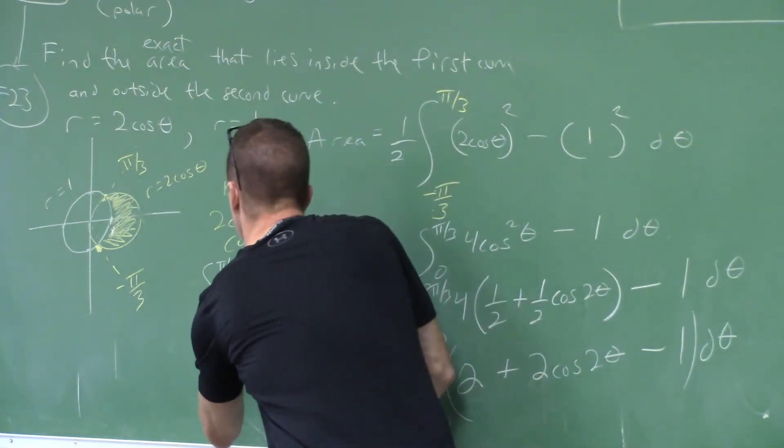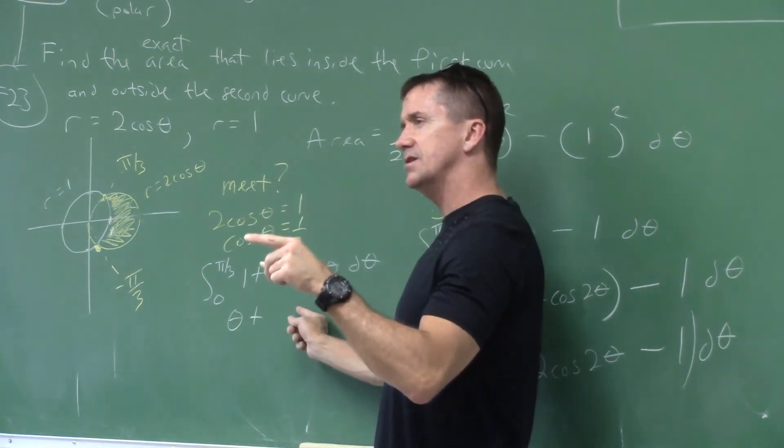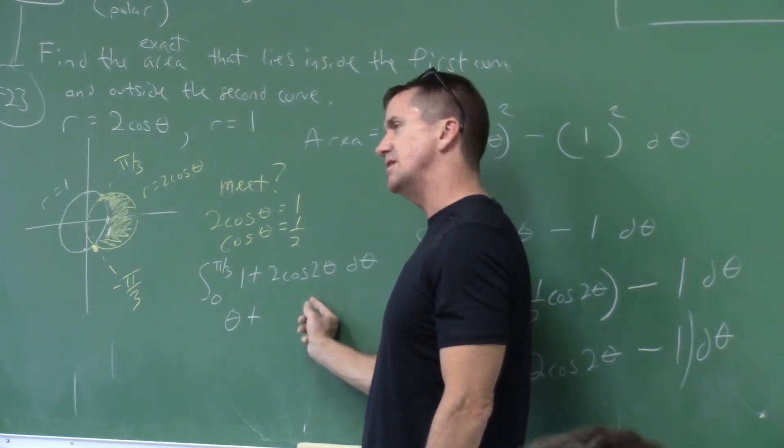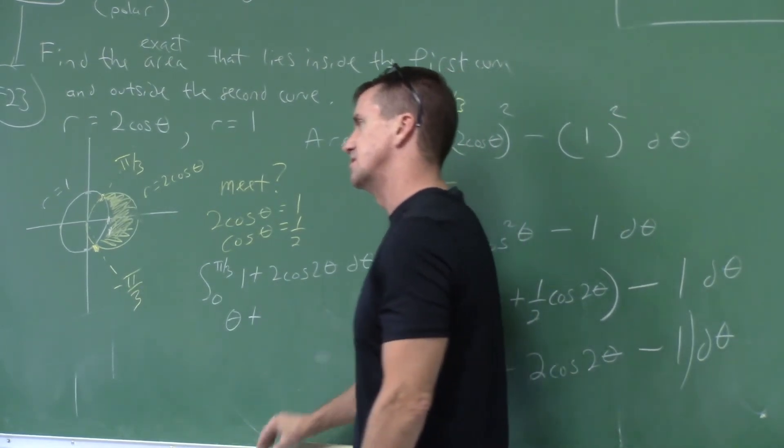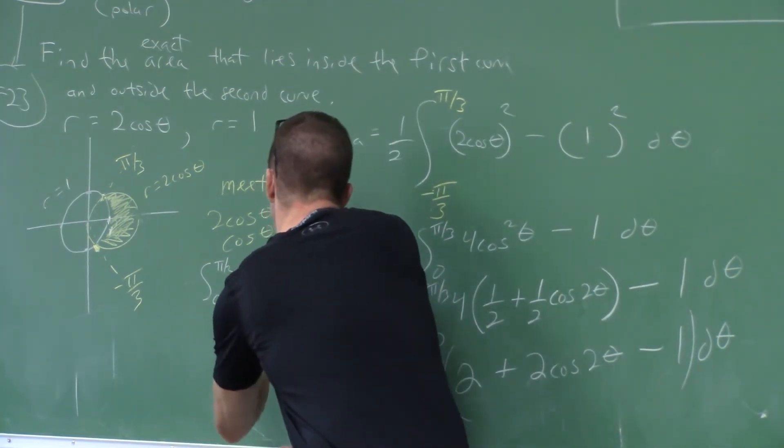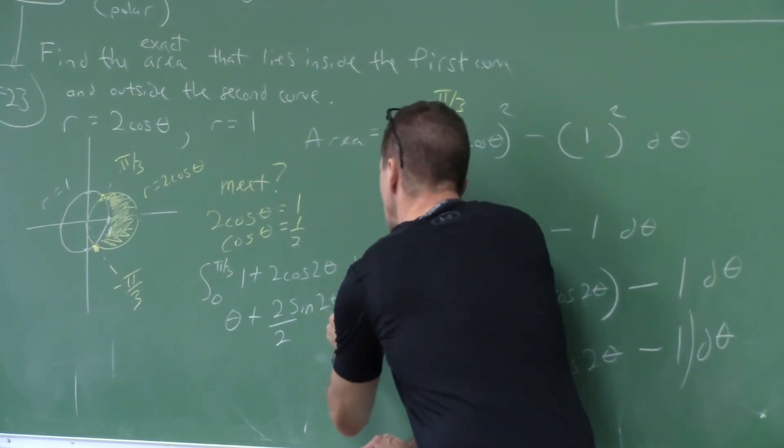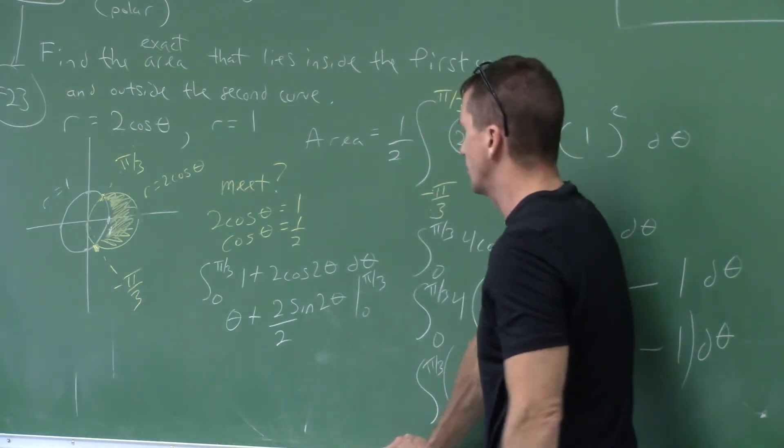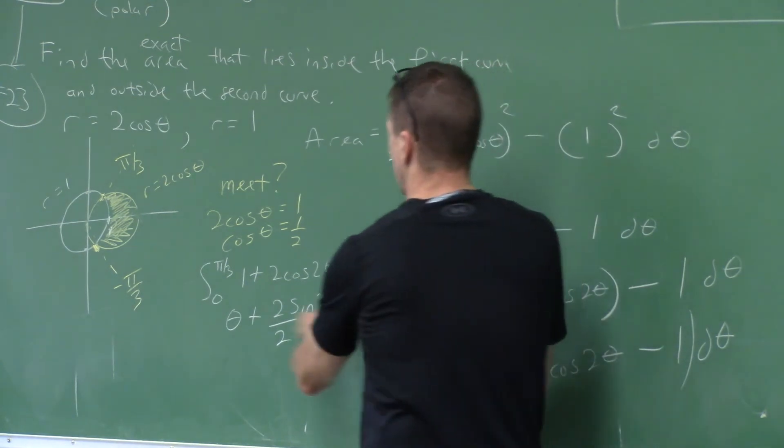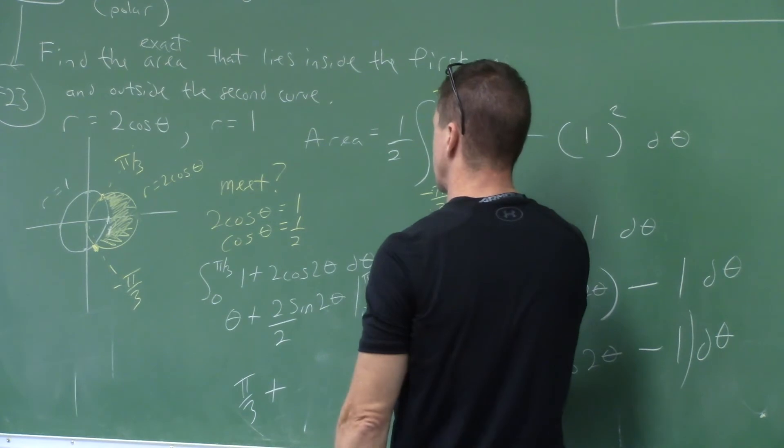What's that integral? That's theta. What will this become? Sine two theta divided by two. Two sine two theta divided by that two that emerges when you do the u substitution. It just keeps happening over and over. So what do we get in our answer?